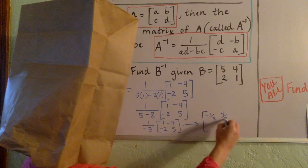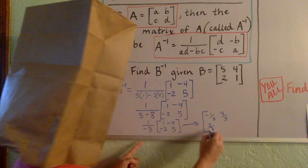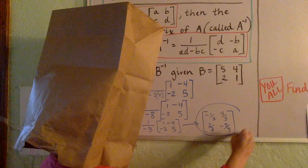Negative 1 over 3 times negative 2 means down here becomes positive 2 thirds. And negative 1 third times 5 is negative 5 thirds. And there is your inverse.